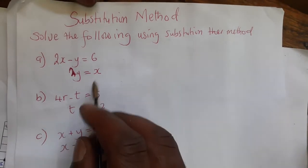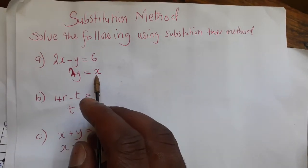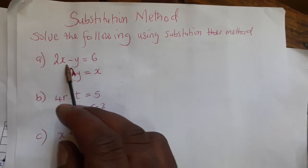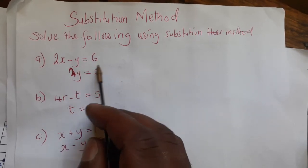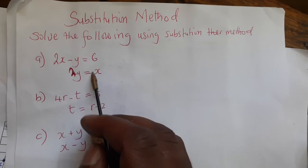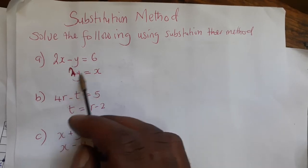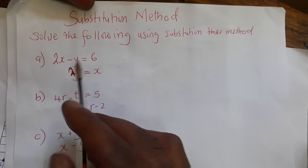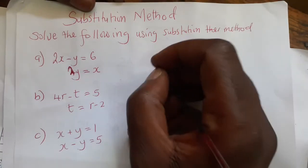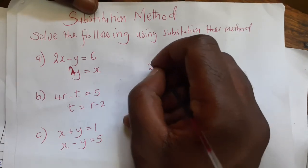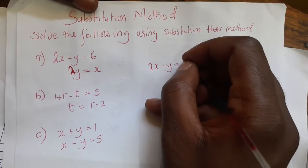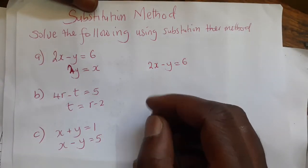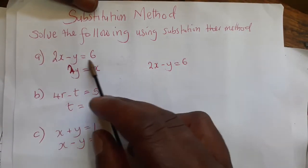It's very easy because x has already been made the subject of the formula. So we use the first equation. The first equation is 2x minus y equals 6. Now we use the second equation for substitution.